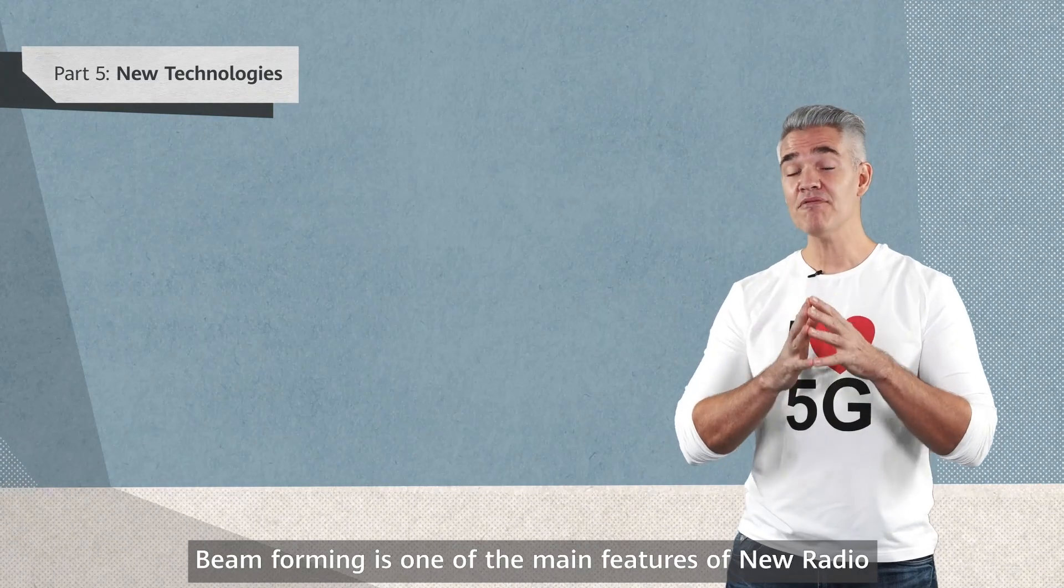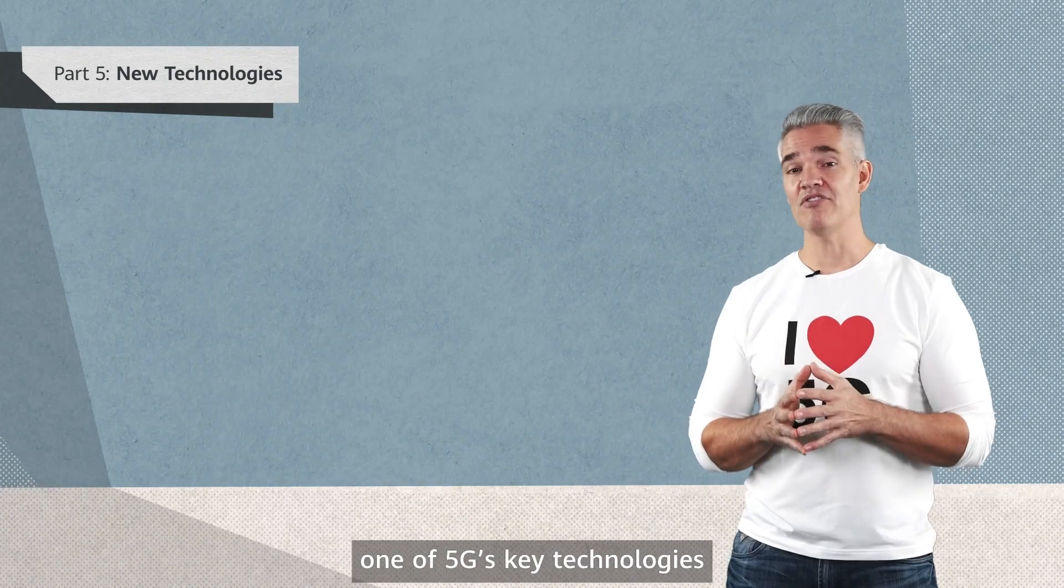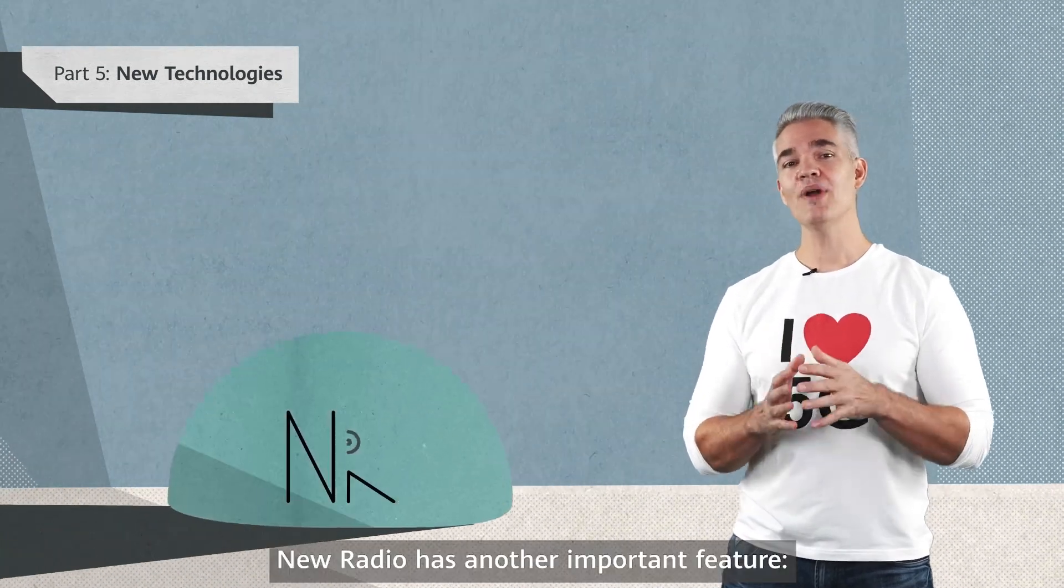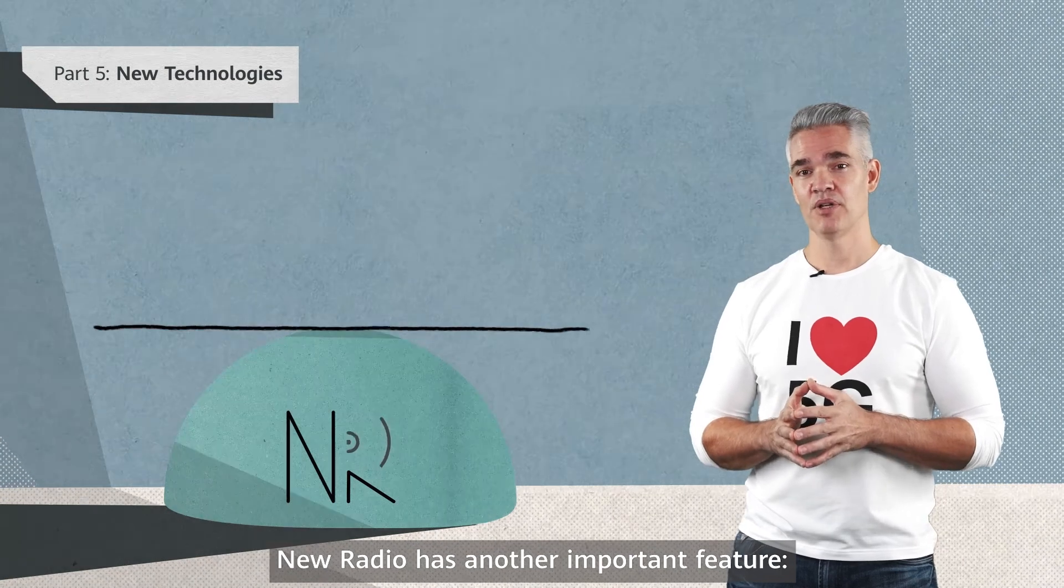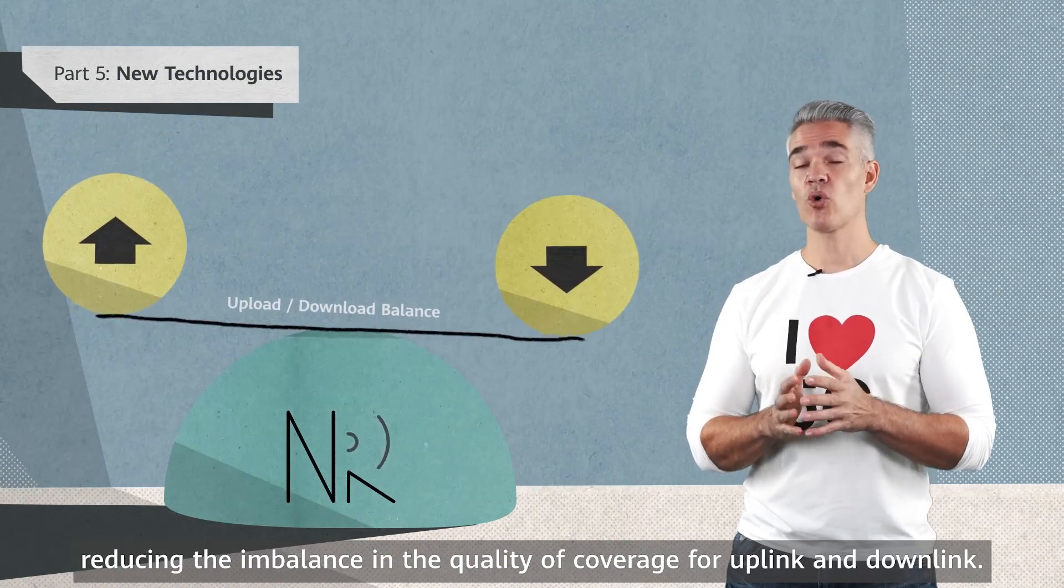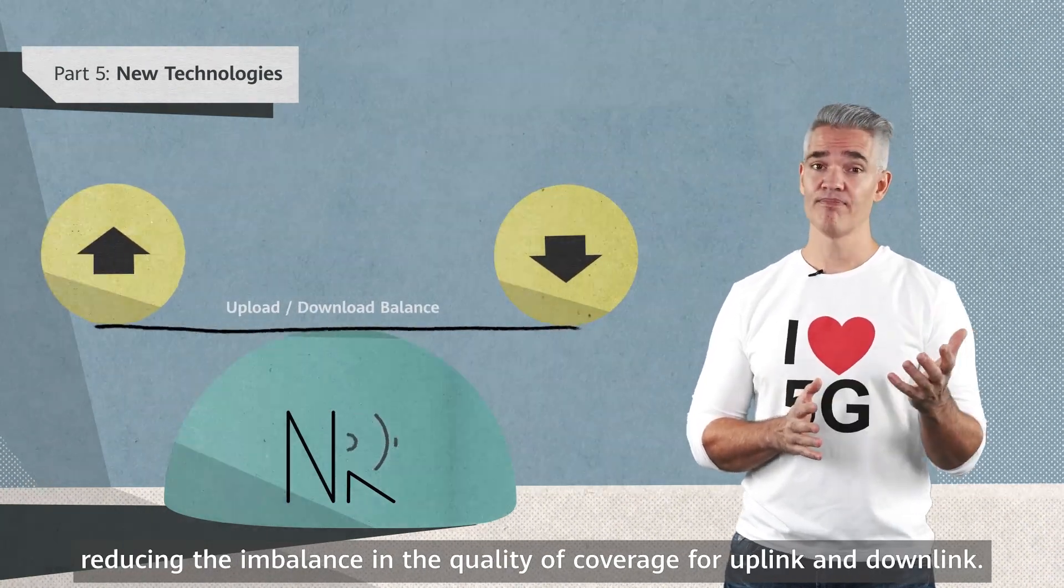Beamforming is one of the main features of new radio, one of 5G's key technologies. New radio has another important feature: reducing the imbalance in the quality of coverage for uplink and downlink.